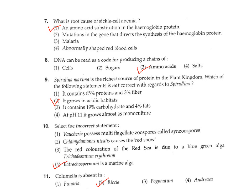Question 8: DNA can be read as a code for producing what? DNA codes for protein. So the correct answer is chains of amino acids, Option 3. Question 9: Spirulina maxima is the richest source of protein in the plant kingdom. Which of the following statements is not correct with regard to Spirulina?